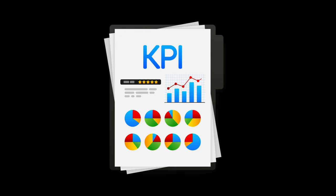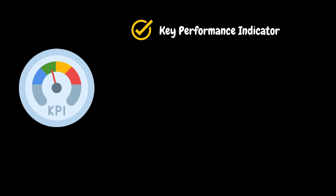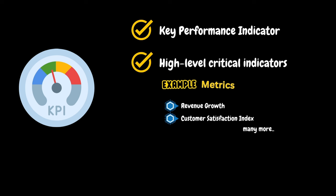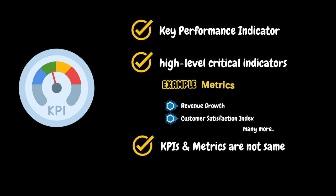During performance testing requirement-gathering or planning sessions with business users or application teams, you will encounter the term KPI. KPI stands for Key Performance Indicator — it reflects a company's strategic goals and objectives. Example KPI metrics include revenue growth and customer satisfaction index. KPIs and technical metrics are two different things. From a performance testing point of view, a KPI might be that one transaction completes within a given time limit, whereas the technical metric is the average response time.